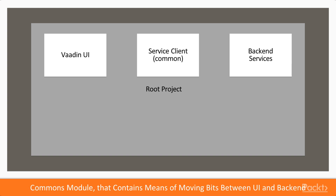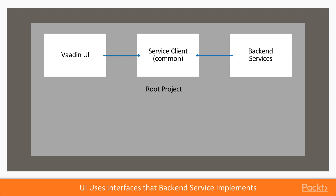As both of these ends need to be able to exchange some information, we need something in between. This something is often called the Commons project — the classes that can potentially be serialized and sent over the wire from one end to another. If you're using REST, the things in this middle module could be, for example, your DTOs. Or if you're a Java EE developer using EJBs, the things in the middle module could be the service client of your backend EJBs. These are something that are not used only by the UI, but also by the backend, and the backend hence needs to be aware of this stuff.